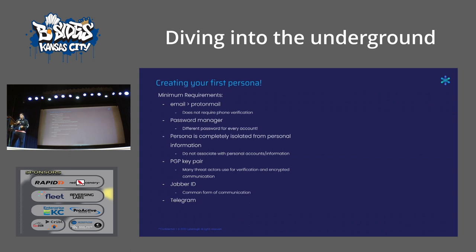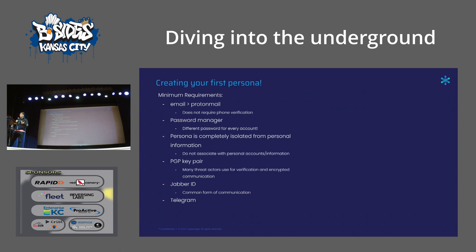Some of the requirements for your persona: a burner email — I use ProtonMail as my go-to. You're definitely not going to use Gmail or anything that requires identity verification. Use a password manager — if you don't, you risk logging into a site that's no longer legitimate and losing access to all your personas. Do not reuse passwords. Make sure your persona is completely isolated from the real you. Use communication methods like PGP, Jabber, and Telegram.